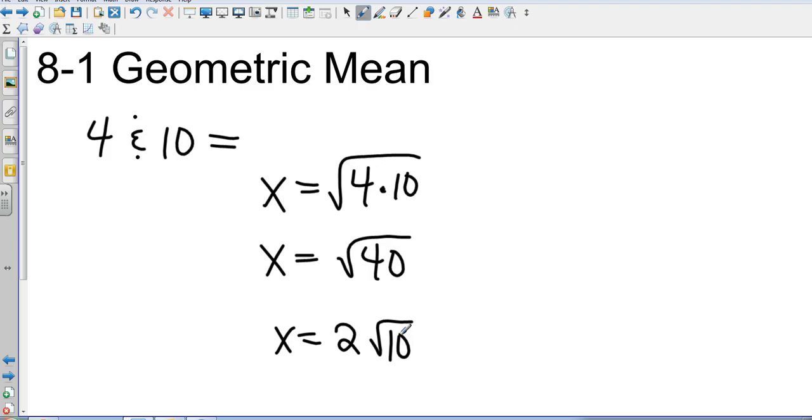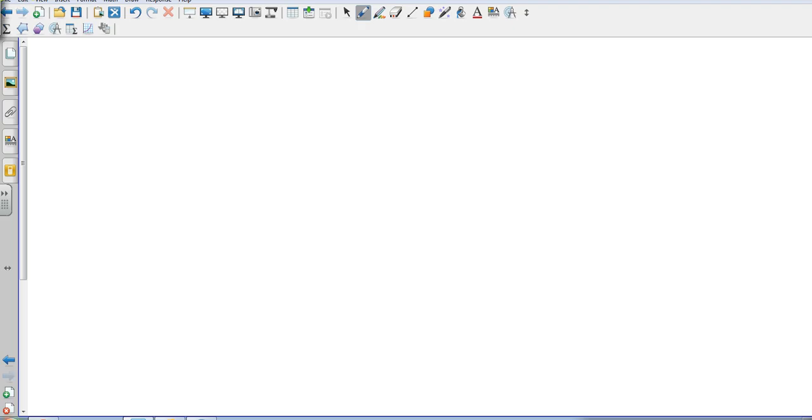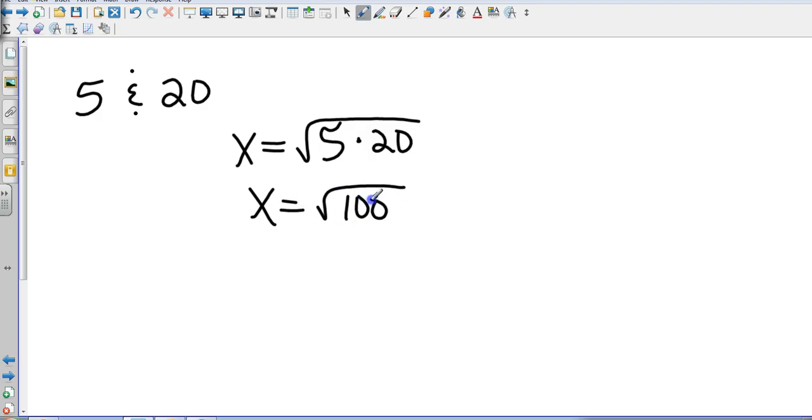Let's do another one real quick, and then I'll show you how to actually apply it into a triangle problem. So let's go 5 and 20. This one's going to be tough. Setting you up for success on this one. The geometric mean is the square root of their product, which is going to be the square root of 100, giving you a geometric mean of 10.